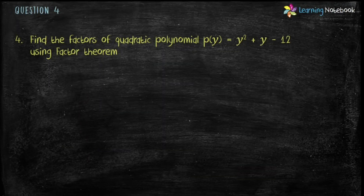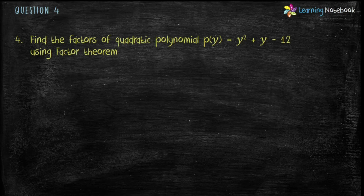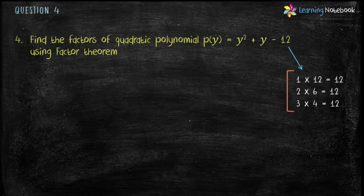Now let's do the next question. Question 4: find the factors of quadratic polynomial P(y) equals y² plus y minus 12 using Factor Theorem. To find factors of the polynomial, let's first find factors of the constant term 12: 1×12=12, 2×6=12, and 3×4=12. Now let's put these values in P(y) and check if P(y) equals 0.